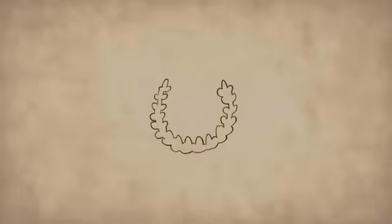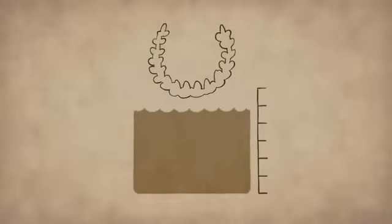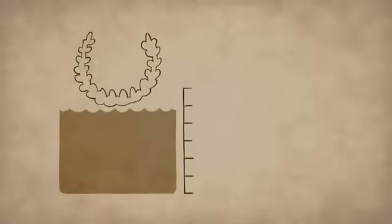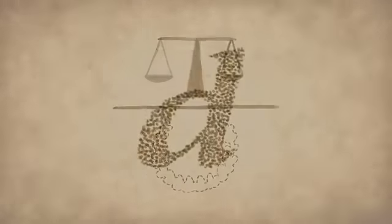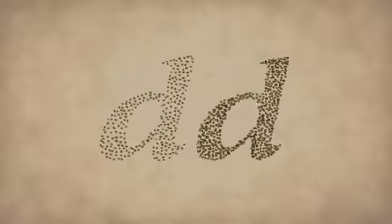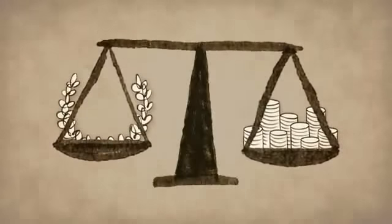The solution, Archimedes realized, was to give the crown a bath. By placing it in water and seeing how much water was displaced, he could measure the volume. Then he'd calculate the density of the crown. If the crown was less dense than pure gold, then the goldsmith most definitely cheated the king.